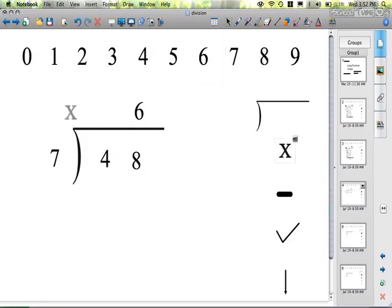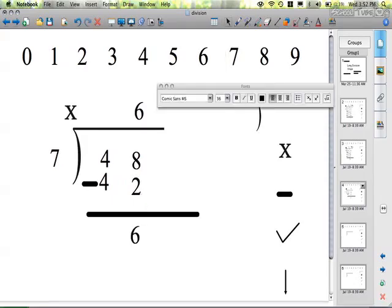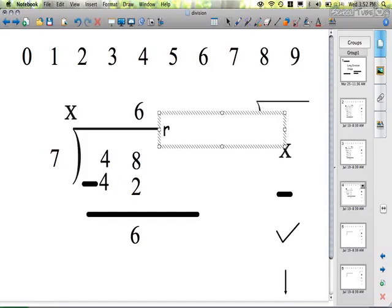Step 2, 6 times 7, 42. Step 3, subtract. 8 minus 2 is 6, 4 minus 4 is 0. So then my 6 is my remainder.